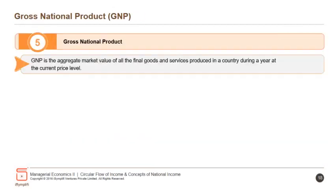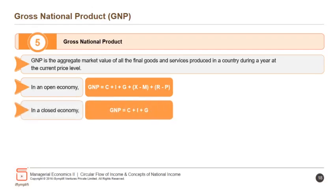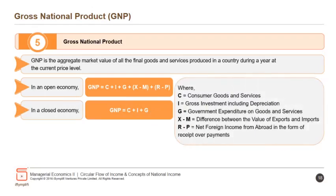Gross national product (GNP) is the aggregate market value of all the final goods and services produced in a country during a year at the current price level. In an open economy, GNP = C + I + G + X − M + R − P. In a closed economy, GNP = C + I + G, where C is consumer goods and services, I is gross investment including depreciation, G is government expenditure on goods and services, X − M is the difference between the value of exports and imports, and R − P is net foreign income from abroad in the form of received over payments.